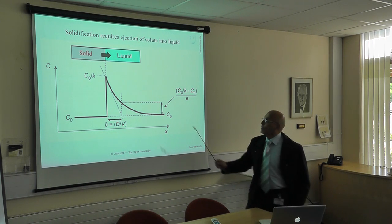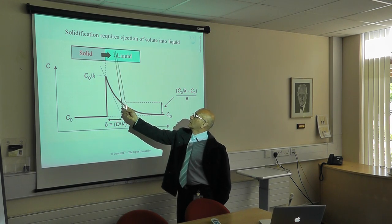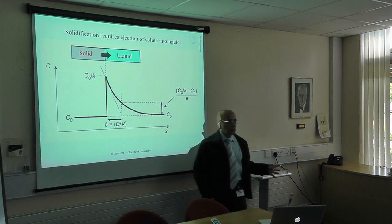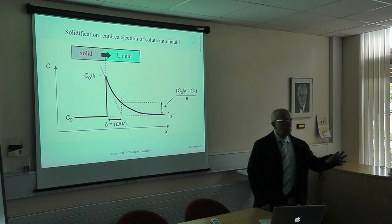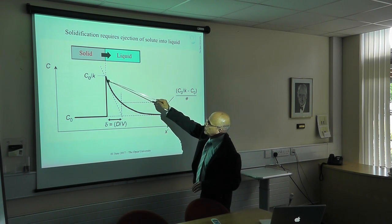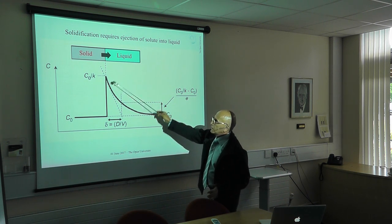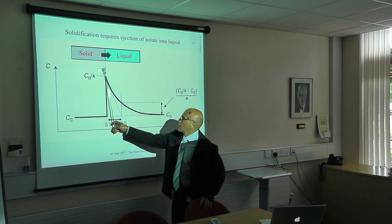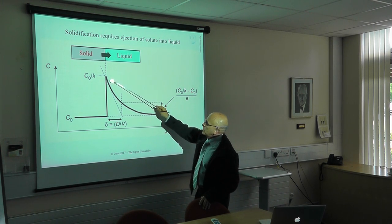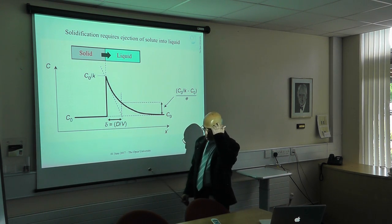In solidification, for example, the material is solidifying and you have a moving boundary — the solid-liquid boundary is moving. Because solidification requires the realignment of the solute, the solute has to be ejected into the liquid. So in front of the solid-liquid boundary, you will build up the diffusion layer. If the diffusion coefficient is fast, this moving boundary can move faster; if it is very low, it flattens out and slows down the movement of the interface.